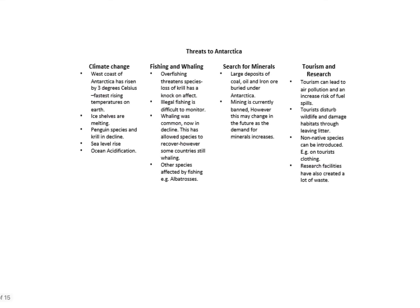Last but not least, your final case study is Antarctica as a global common. Antarctica covers an area of about 14 million kilometres squared and holds 70% of the world's ice and 70% of its fresh water — it's a huge natural resource we all have equal investment in. There are four main threats to Antarctica: climate change, fishing and whaling, the search for minerals, and tourism and research. On climate change, the west coast of Antarctica has risen by three degrees Celsius and ice shelves are melting.